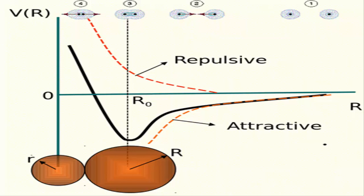Force between the atoms is the negative of the slope of this curve. At equilibrium, repulsive force becomes equal to the attractive force.